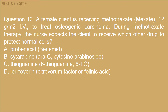Question 10: A female client is receiving methotrexate 12 grams/m² IV to treat osteogenic sarcoma. During methotrexate therapy, the nurse expects the client to receive which other drug to protect normal cells? A) Probenecid. B) Cytarabine (Ara-C). C) Thioguanine (6-thioguanine). D) Leucovorin (folinic acid).